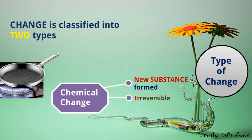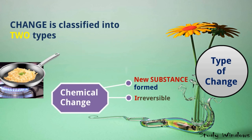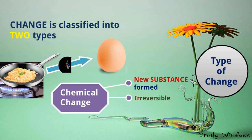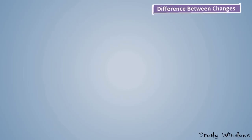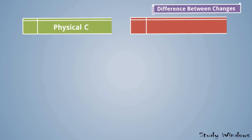For chemical change — I know everybody likes omelet! We take a frying pan and make an omelet from a raw egg. The raw egg is totally changed into omelet. The omelet is a new substance, and we cannot change it back into an egg — so it is irreversible. This is an example of a chemical change.